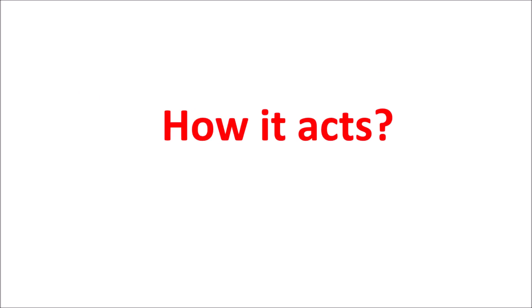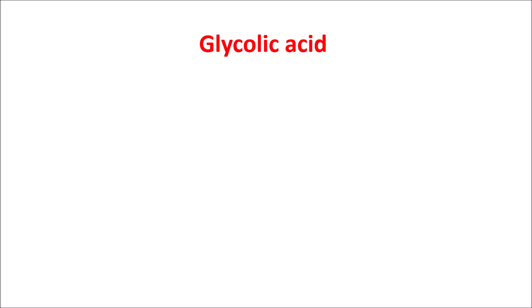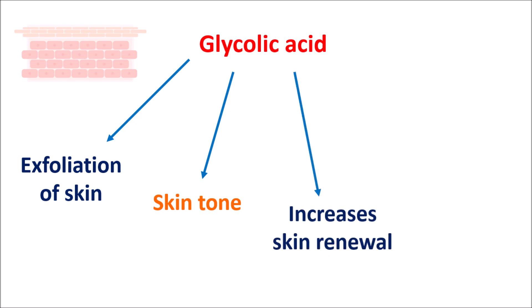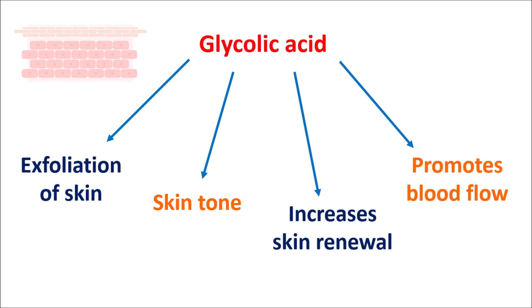Now let us see how glycolic acid acts. Being an alpha hydroxy acid, it can act in different ways. First, it produces exfoliation of the skin, reducing dead cells. It also reduces melanin pigmentation, changing the skin tone. It can increase skin renewal, so new cells are more rapidly formed. Even glycolic acid can promote blood flow to the skin cells, further increasing skin renewal. So dead cells are removed, new cells are formed, and pigmentation is reduced, which restores skin conditions.